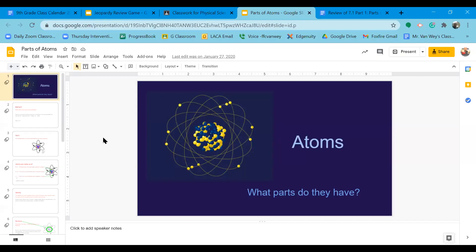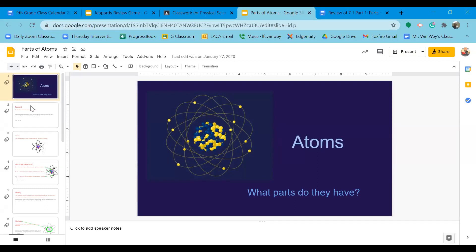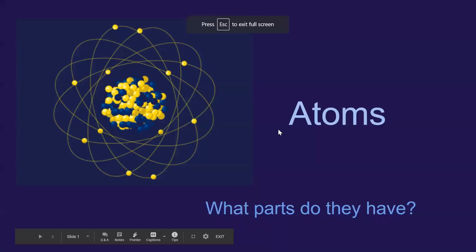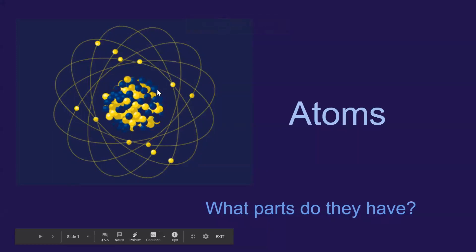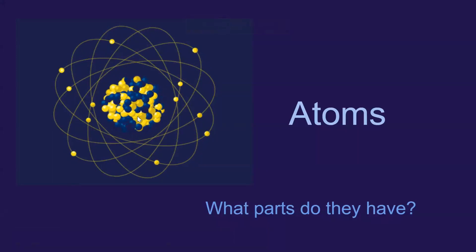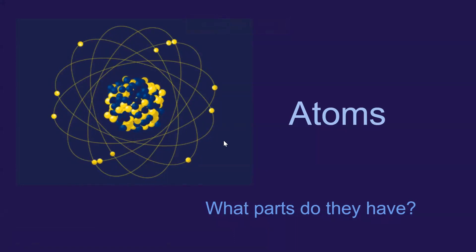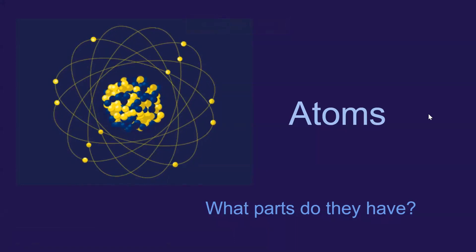Here we are at 7.1, Atoms and Parts of Atoms. We see a picture of what an atom might look like — we have the nucleus of this very large, very massive atom, and then we have the electrons going around the nucleus.